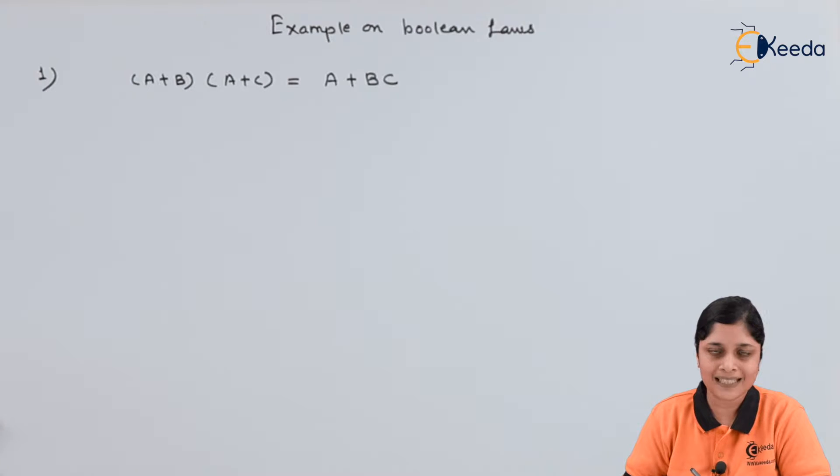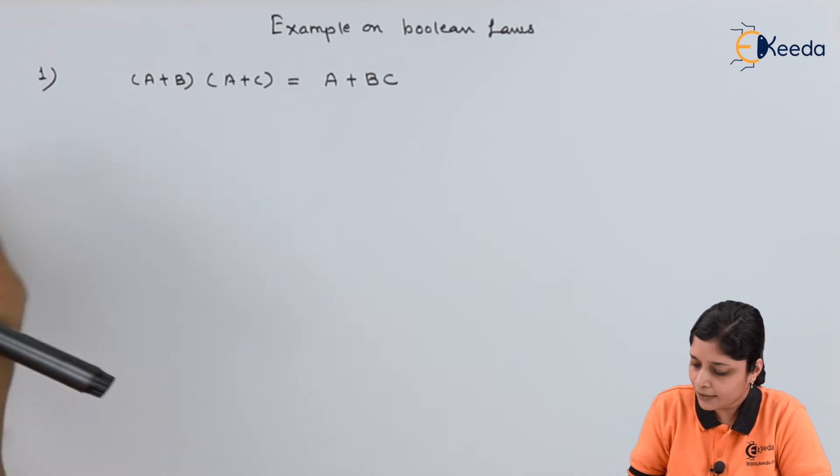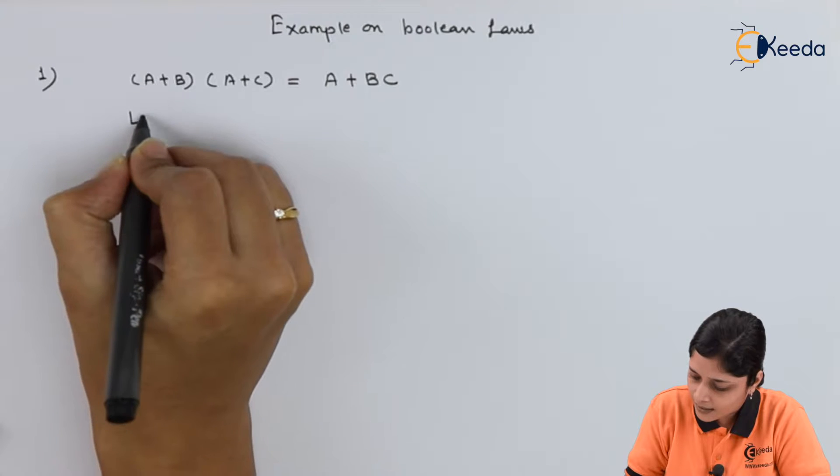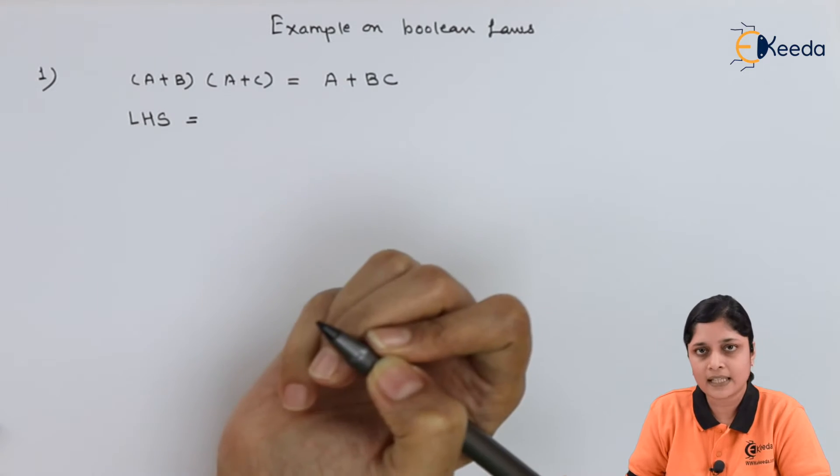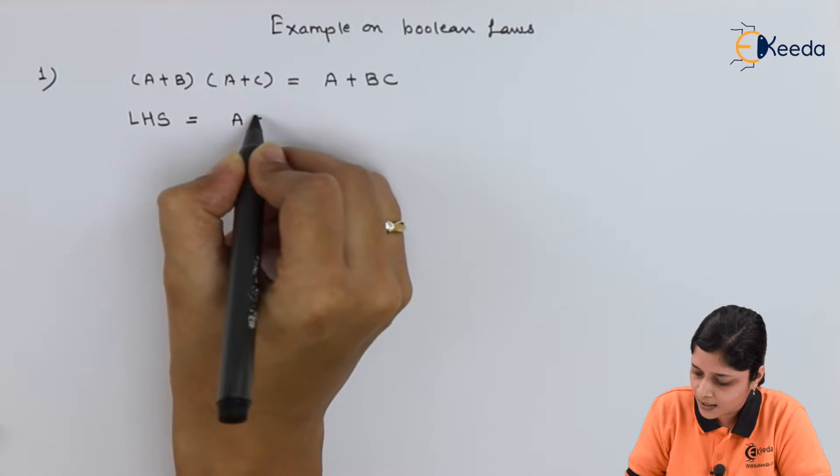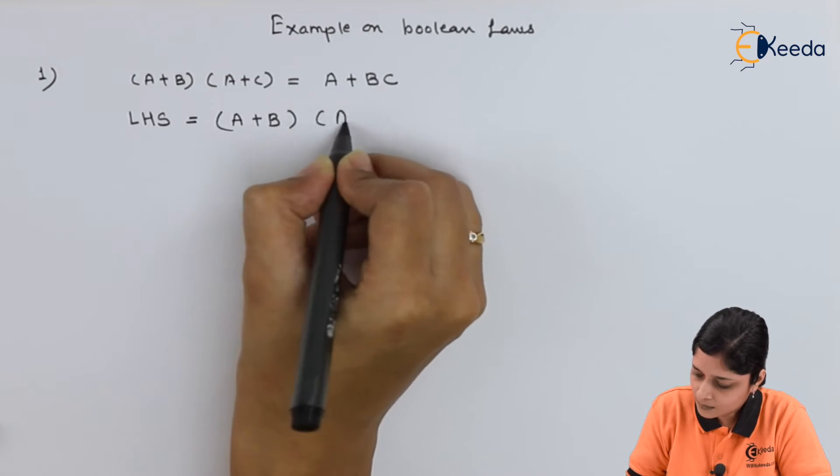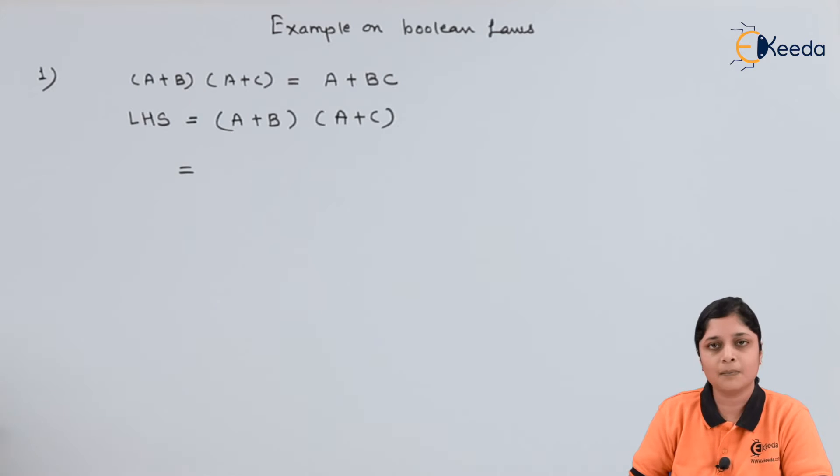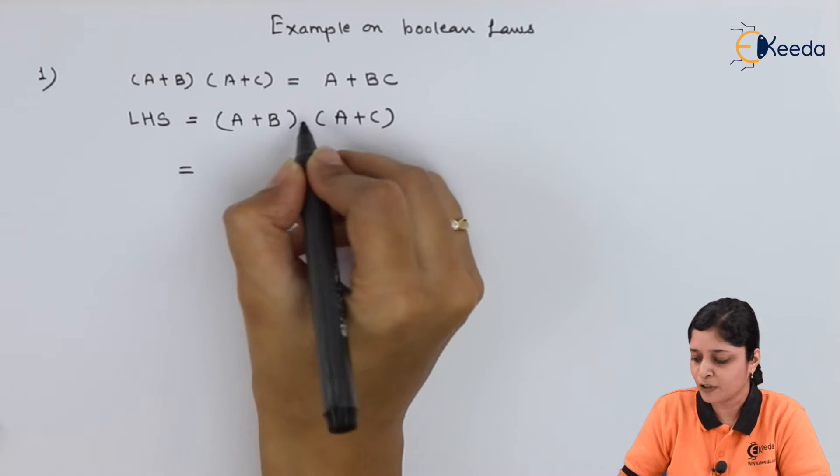How you will prove? The step is, take left hand side part LHS. This side is LHS and here is RHS. So we will start with the LHS: (A+B)(A+C).